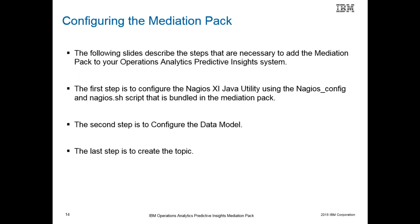The following slides describe the steps necessary to add the Mediation Pack to your Operations Analytics Predictive Insights environment. The first step is to configure the Nagios XI Java utility using the Nagios config file and nagios.sh script bundled in the Mediation Pack. The second step is to configure the data model. The last step is to create the topic.